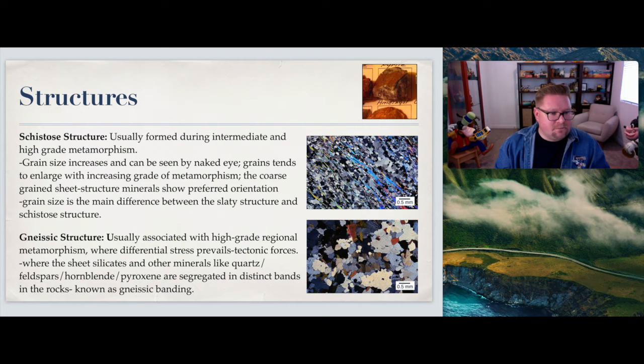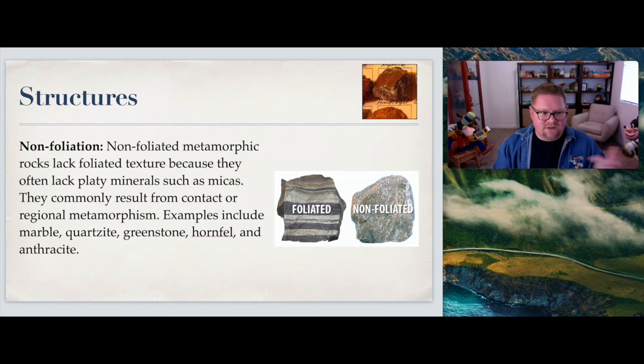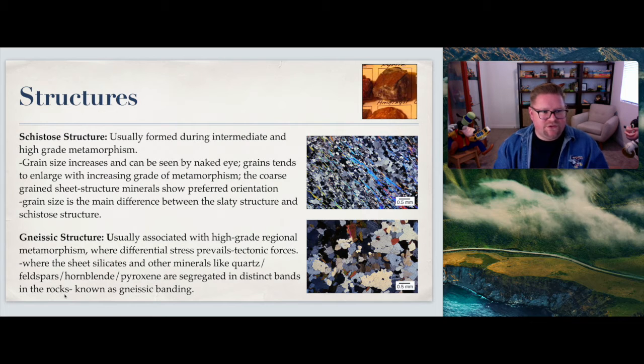Let me talk about schistose structure and gneissic. Because of this idea of pressure and heat and metamorphic environments, we can have other types of structures. Schistose is usually formed during intermediate and high grade metamorphism. The grain size will increase, it can be seen by the naked eye, the grains tend to be enlarged with increasing grade of metamorphism. The coarse-grained sheet structure minerals will show preferred orientation. Notice in the diagram we can see there is a preferred orientation pattern. Grain size is the main difference between slaty structures and schistose structures. Schist is a type of metamorphic rock as well, and that's where it gets its name from.